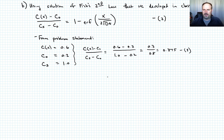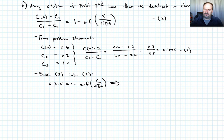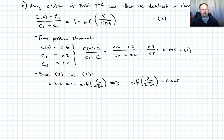Substituting equation 3 into equation 2, we get 0.375 equals 1 minus the error function of x over 2 root Dt. Rearranging, the error function of x over 2 times the square root of Dt equals 0.625. We'll call this equation 4.